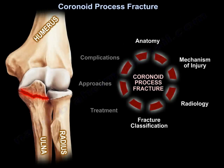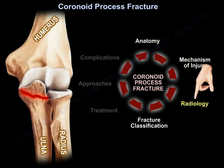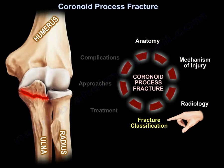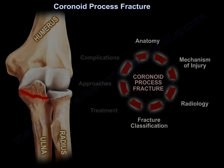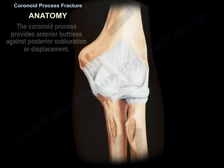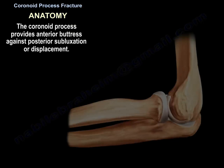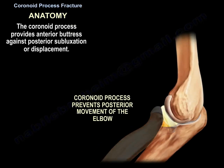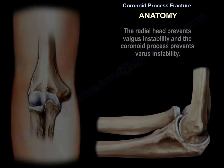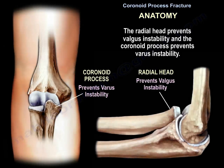Coronoid process fracture: anatomy, mechanism of injury, radiology, and classification. The coronoid process provides an anterior buttress against posterior subluxation or displacement. The radial head prevents valgus instability, while the coronoid process prevents varus instability.